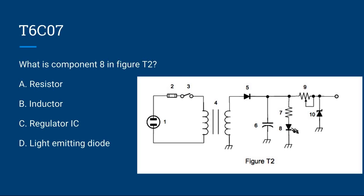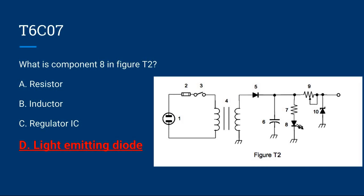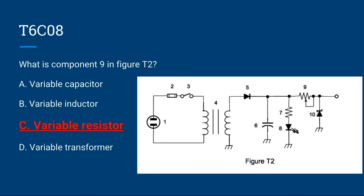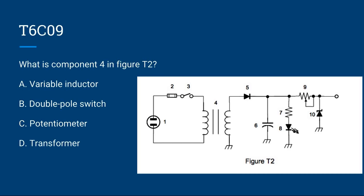T6C05: What is component 4 in figure T2? T6C08: What is component 9 in figure T2? A, variable capacitor. B, variable inductor. C, variable resistor. Or D, variable transformer? The correct answer is C, variable resistor. T6C09: What is component 4 in figure T2? A, variable inductor. B, double pole switch. C, potentiometer. Or D, transformer? The correct answer is D, transformer.